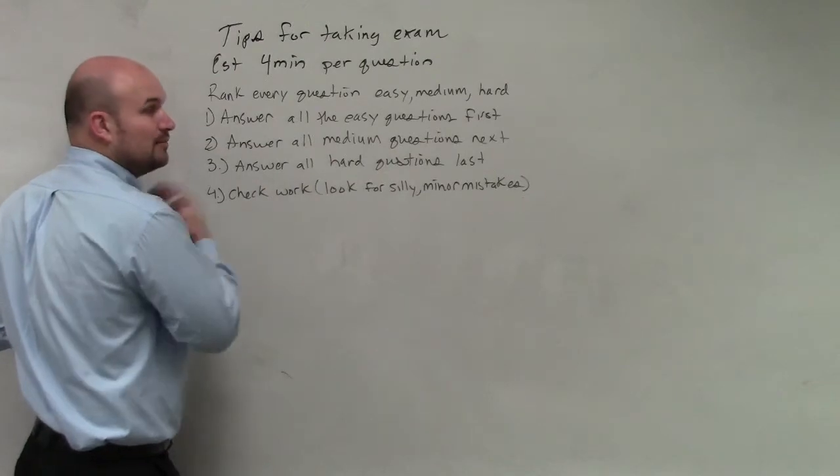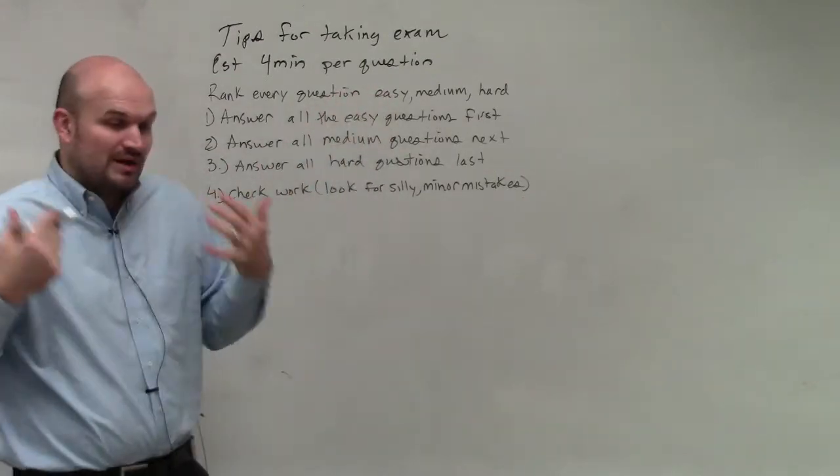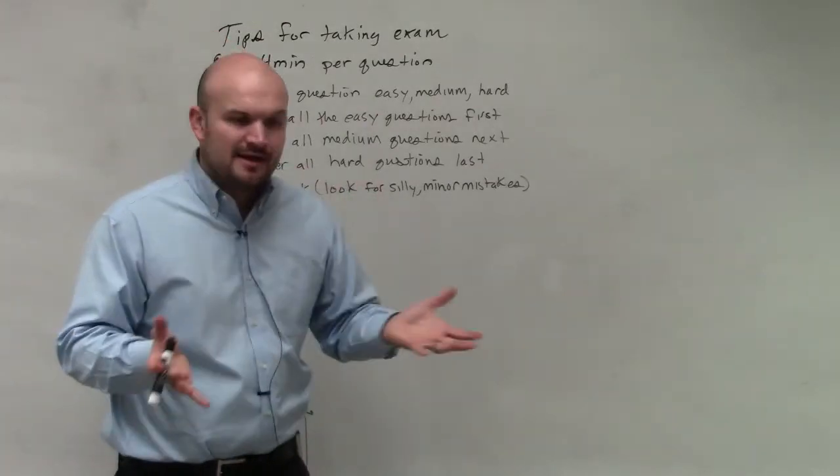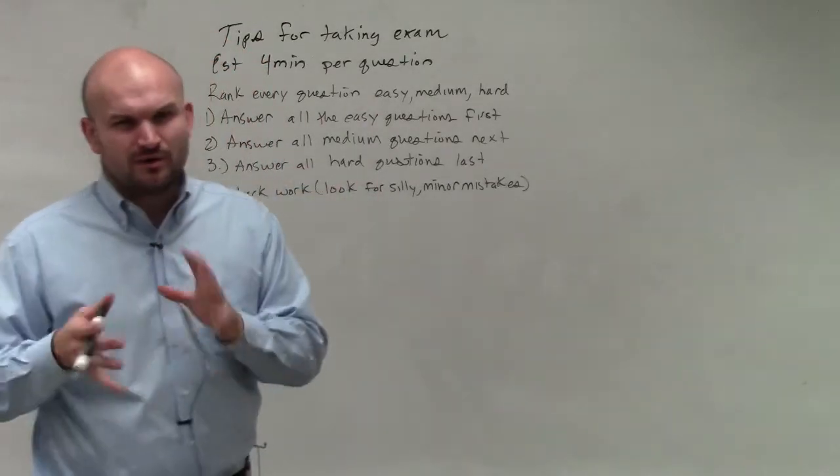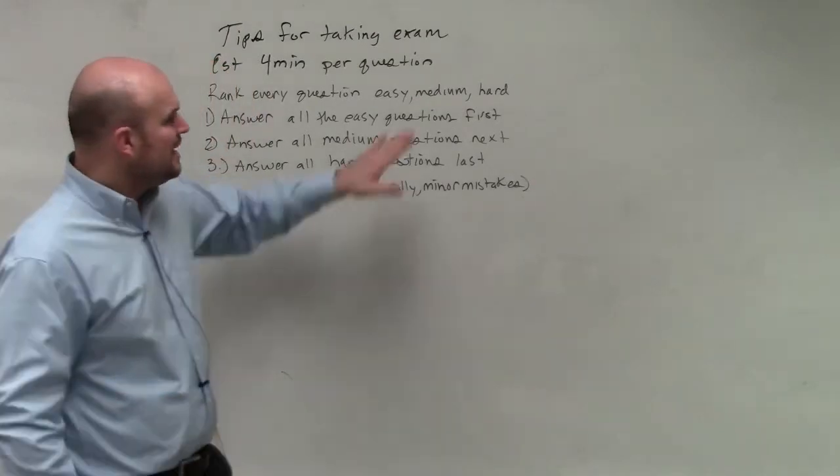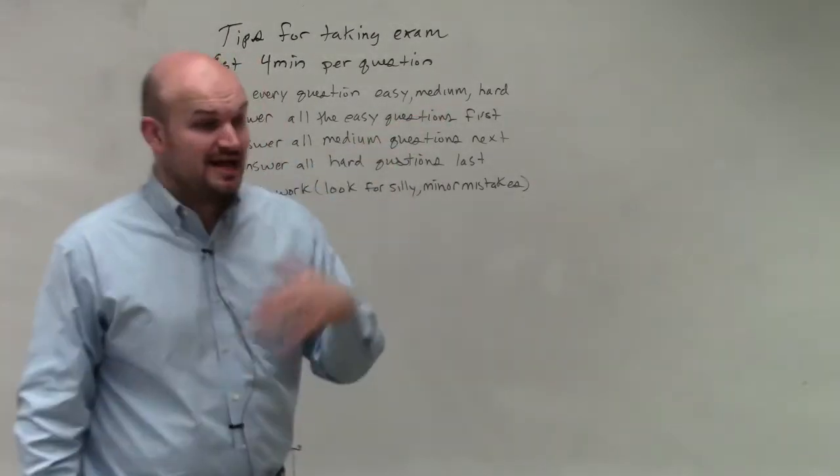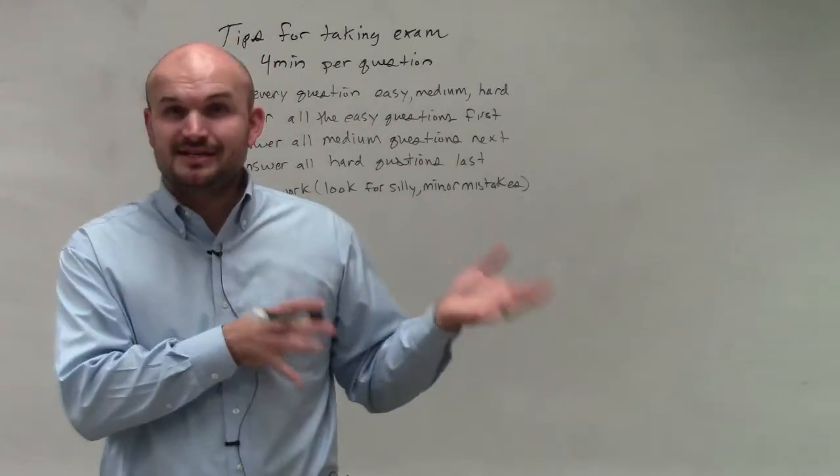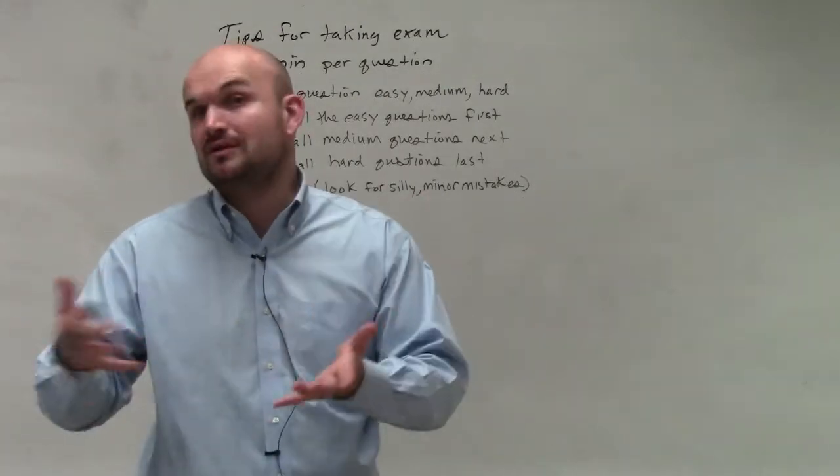So as I'm working through the test, I rank the question as a one, two, and three, whereas a one will be an easy problem, a one that I'm confident in doing. Two would be kind of medium. I know what I'm doing, but it might take a little bit of work, or I have some questions on it. I just got to make sure I'm comfortable. And then three are going to be the hard, the ones that I either have no idea what I'm doing, I know what process I need to do, but it's going to take a little bit more thinking, or a little bit more time.